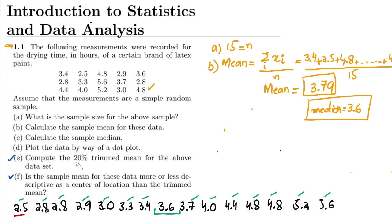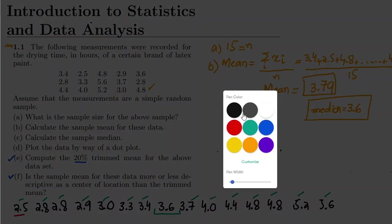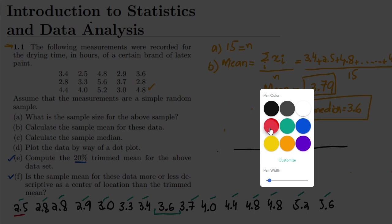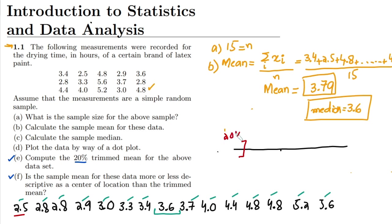In part e, we are asked to compute the 20% trimmed mean for the above data set. So what is meant by the 20% trimmed mean? We have to remove 20% from the lower end and 20% from the upper end of the overall data set. What remains is our new trimmed data set, and we find the mean of that.